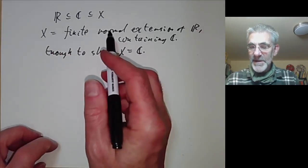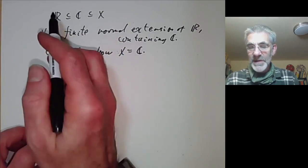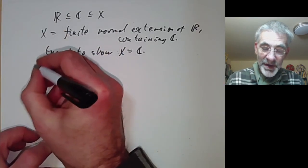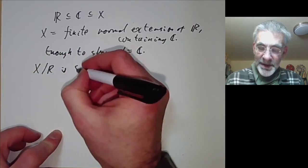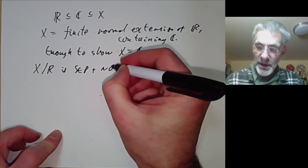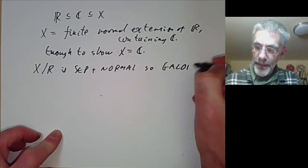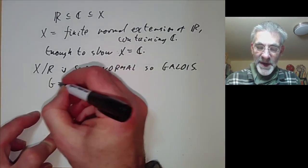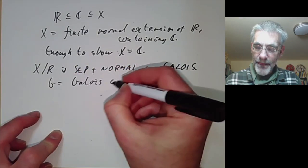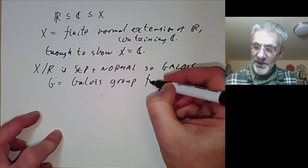X is finite and normal and it's also separable because we're in characteristic zero. So X over R is separable plus normal. So it's Galois. And let's put G to be the Galois group. So it's going to be some finite group.